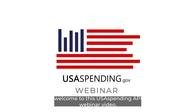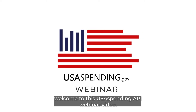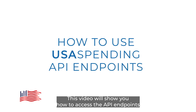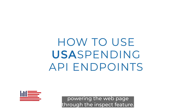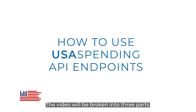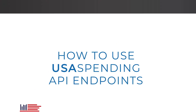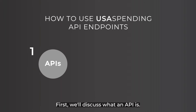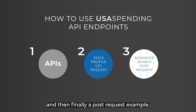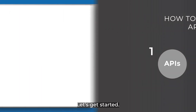Hello and welcome to this USA Spending API webinar video. This video will show you how to access the API endpoints powering the web page through the inspect feature. The video will be broken into three parts: first we'll discuss what an API is, then we'll go over a GET request example, and finally a POST request example. Let's get started.